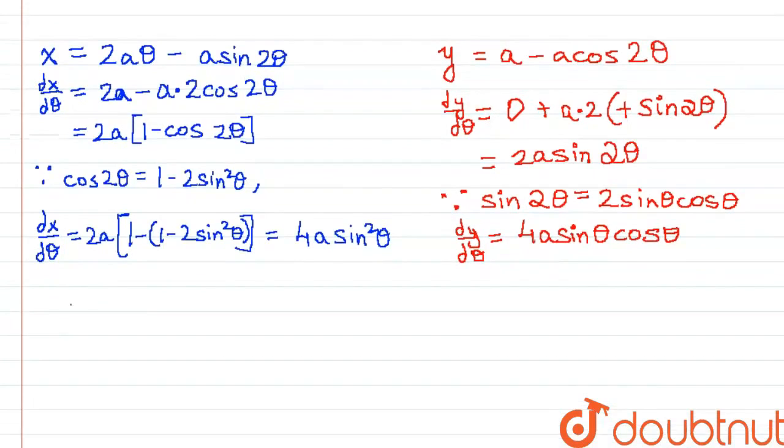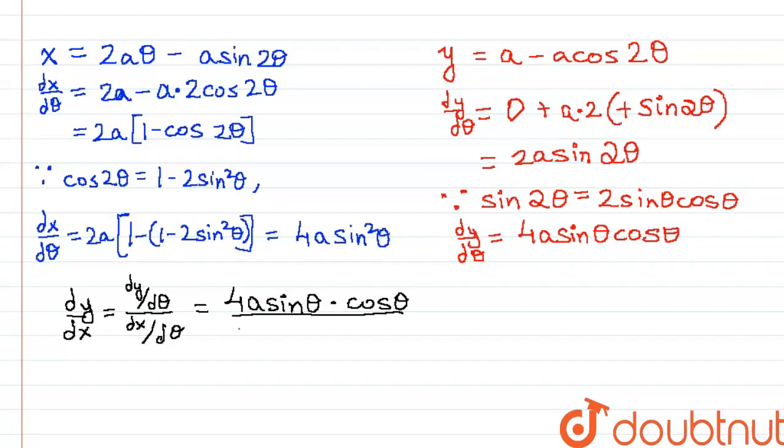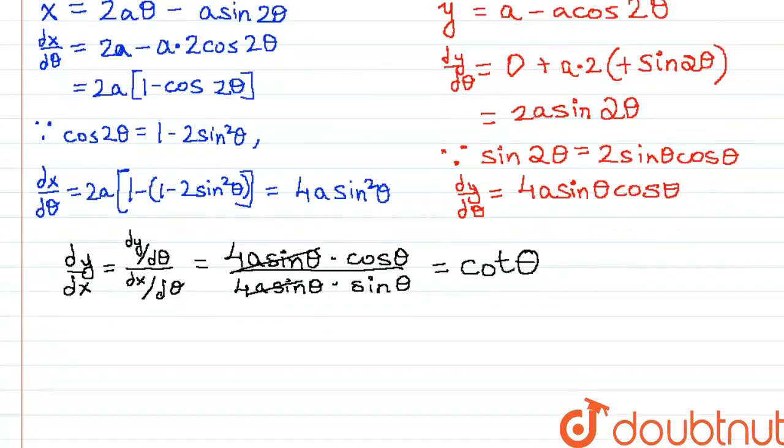Now, for a parametric equation, dy/dx equals (dy/dθ)/(dx/dθ), which is 4A sin θ cos θ divided by 4A sin²θ. We can cancel 4A sin θ from numerator and denominator to get dy/dx = cot θ.